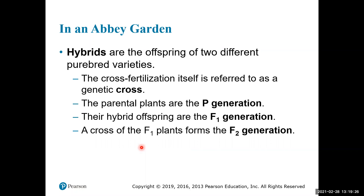The F1 generation is referred to as hybrids — the offspring of two different purebred varieties. This process is known as cross-fertilization, and you're performing a genetic cross between two individual pea plants. The pure-breeding parental plants are the P generation, their hybrid offspring are the F1 generation, and if you cross F1 individuals, the next generation is the F2 generation. So: P generation, F1 generation, and F2 generation.